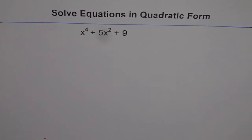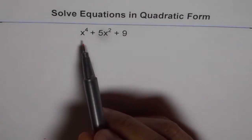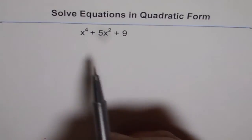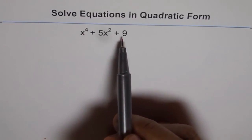We want to solve equations in quadratic form. Before doing that, let's try to understand how to factor expressions which are on either side of the equation. We'll have examples which will involve these equations. Now, if you see this polynomial, it is x to the power of 4 plus 5x squared plus 9.